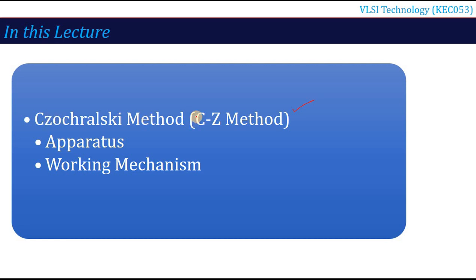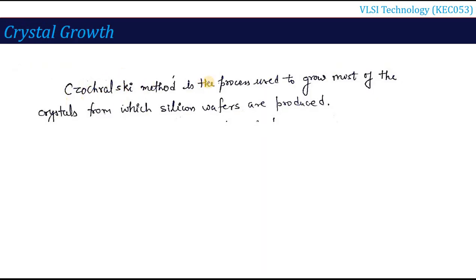Czochralski method, which we are going to talk about, is very important, most important from your examination point of view. What apparatus is used? There are a lot of questions about CZ method and what is the working mechanism. So let's start with Czochralski method. CZ method is basically a process used to grow most of the crystals from which silicon wafers are produced.